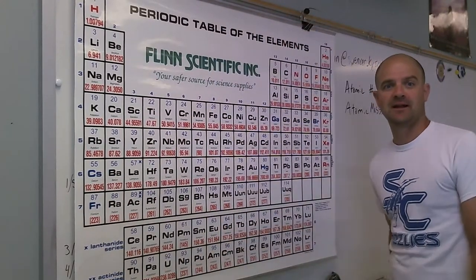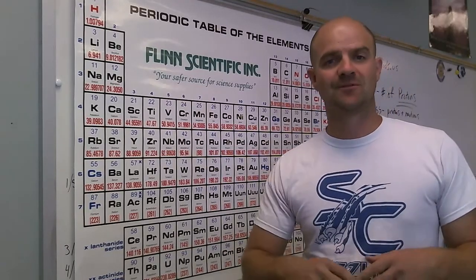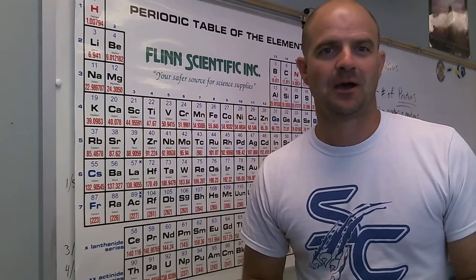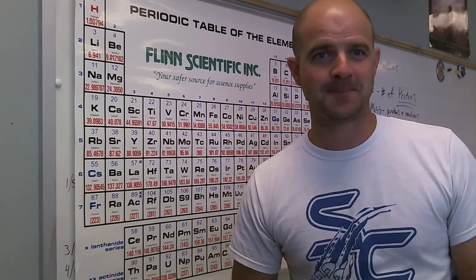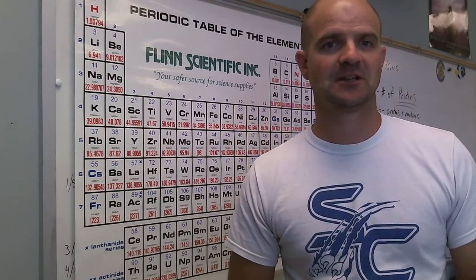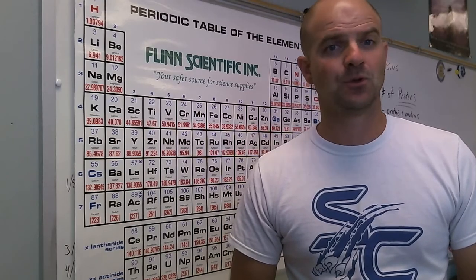Okay, so we're back. Bohr models and Lewis dot structures are two ways that we visually represent an element, an individual atom. The reason it's important is because the technology to see to the atomic level is out there. We can do that sort of thing, but the detail is so fuzzy and hazy that it's much easier and much more useful to model it. A lot of times in science we use models because it helps us to use information, test information, and communicate in a more effective way.